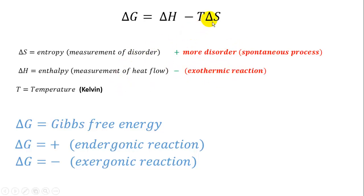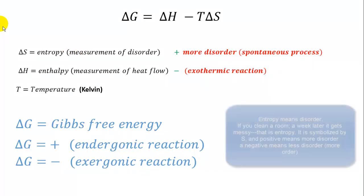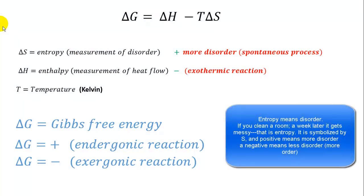A new term here is delta S, which stands for entropy. Entropy is a measurement of disorder — more chaos, more disorder. More molecules, more mass, more disorder. Because they take up space, the bonds rotate, more collisions — everything that contributes to disorder has a positive entropy.